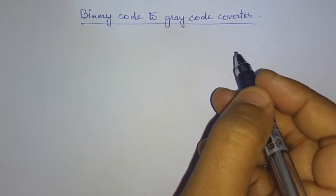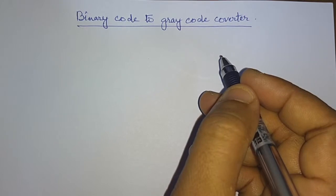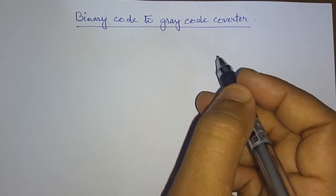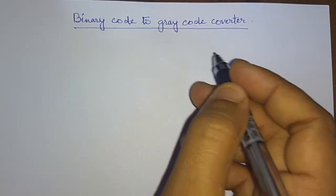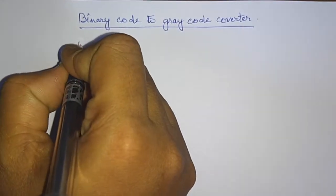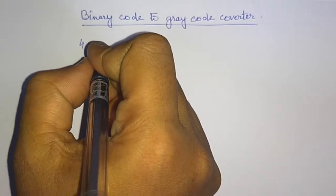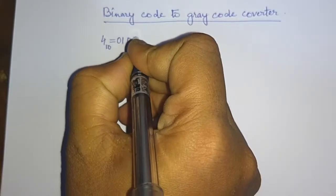What is a binary code? Binary code is nothing but we have a base of 2. That means if any number, suppose 4, we can represent it as 0100.